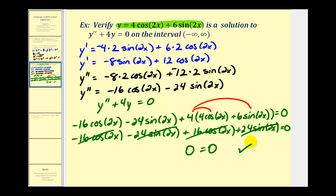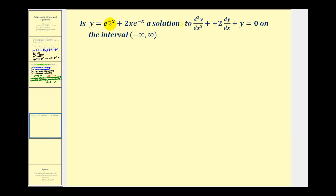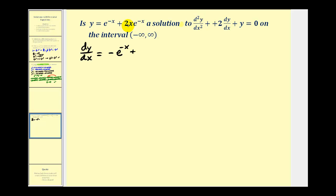Okay, I think we have time for one more. We ask: is y equals e to the negative x plus 2x·e to the negative x a solution to the given differential equation? Notice we'll have to find the first derivative and the second derivative. So we'll first find dy/dx. The derivative of e to the negative x will require the chain rule.